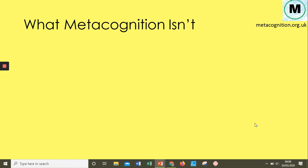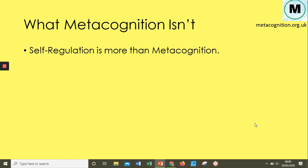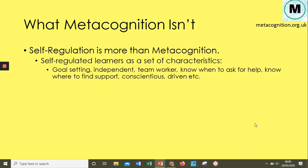Now let's look at where metacognition fits in the wider literature. Firstly, it isn't self-regulation. Self-regulation is more of an umbrella term for personal and social development — we see a self-regulated learner as one who is driven, motivated, can work independently, always gets work done, and has a range of strategies. Metacognition is part of this umbrella, but it's not all of it.